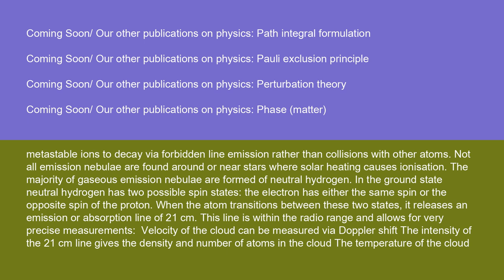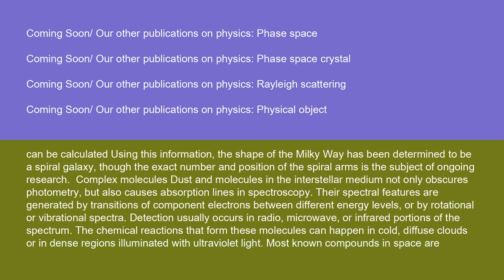Not all emission nebulae are found around or near stars where solar heating causes ionization. The majority of gaseous emission nebulae are formed of neutral hydrogen. In the ground state, neutral hydrogen has two possible spin states — the electron has either the same spin or the opposite spin of the proton. When the atom transitions between these two states, it releases an emission or absorption line of 21 centimeters. This line is within the radio range and allows for very precise measurements. Velocity of the cloud can be measured via Doppler shift; the intensity of the 21-centimeter line gives the density and number of atoms in the cloud, and the temperature of the cloud can be calculated. The shape of the Milky Way has been determined to be a spiral galaxy, though the exact number and position of the spiral arms is the subject of ongoing research.